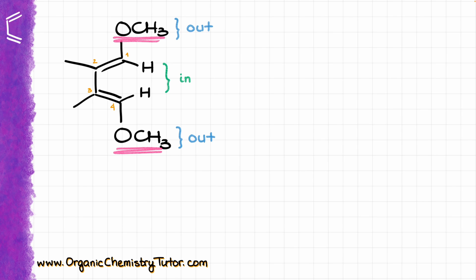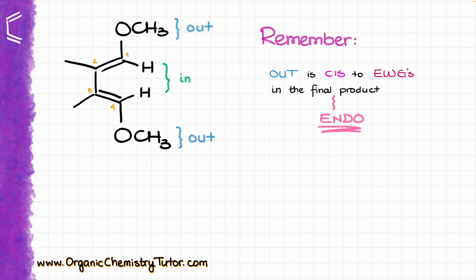Since we are working on the correct stereochemistry of specifically the endo product, because we know that the endo product is going to be the expected product of this reaction, the relationship that you want to memorize between the in and out groups and the electron-withdrawing groups of the dienophile is the following. The out-groups are going to be cis to the electron-withdrawing groups on your dienophile in the endo product. And likewise, if you have in-groups, the in-groups are going to be trans to electron-withdrawing groups of the dienophile.